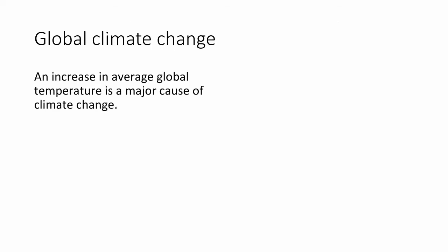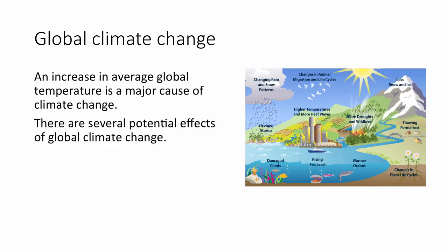Global climate change. An increase in the average global temperature is a major cause of climate change. There are several potential effects: changes in rain and snow patterns, more frequent and stronger storms, bleaching of coral, rising sea levels, warmer oceans affecting biodiversity, changes in plant life cycles, thawing of permafrost and tundra, more droughts and wildfires, higher temperatures and more heat waves, changes in animal life cycles, and melting of snow caps and glaciers.